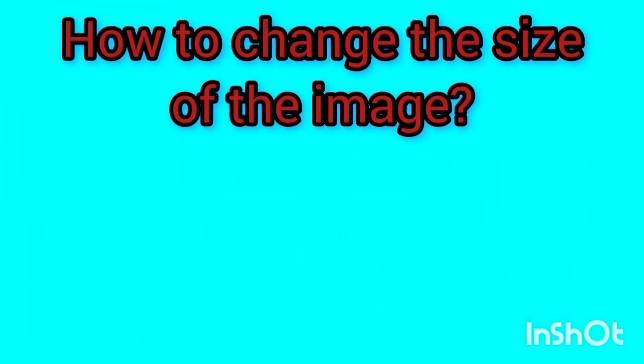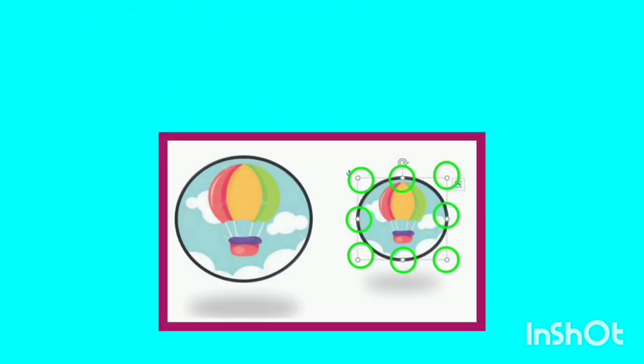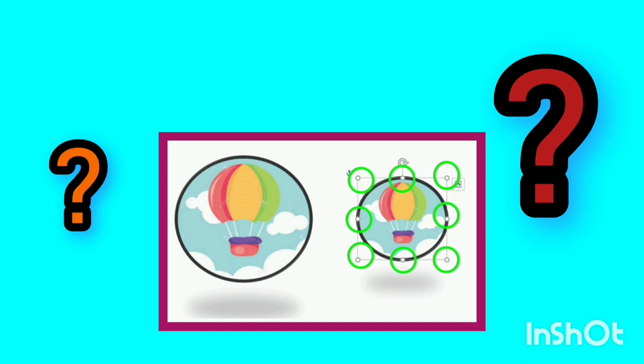We want to learn how to change the size of the image. Click on the desired photo once to select it. Then you can make it bigger or smaller by dragging the white circles around the image. I made my photo smaller. What about you — big, small, or medium? Write me in the comments about the size of your picture.